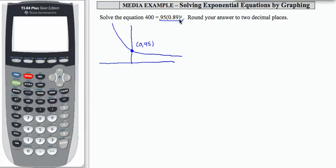We want to know where the output for this function is 400. Because 400 is bigger than 95 by a substantial amount, this graph is not really going to be to scale. I'm going to say that the 400 line is about right there. So that would be y = 400.